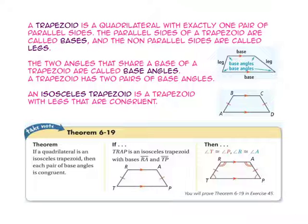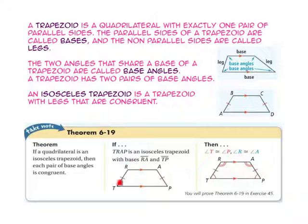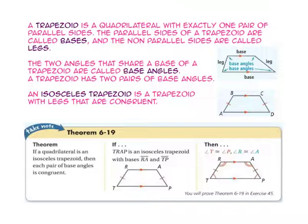An isosceles trapezoid has legs that are congruent. Theorem 6-19 says that if a quadrilateral is an isosceles trapezoid, then each pair of base angles is congruent. So angle T is congruent to angle P, and angle R is congruent to angle A.